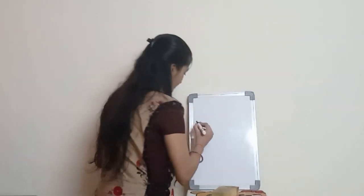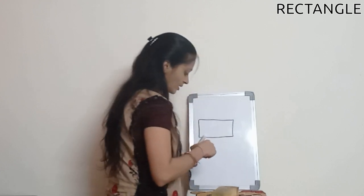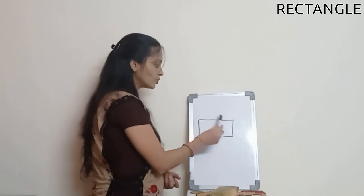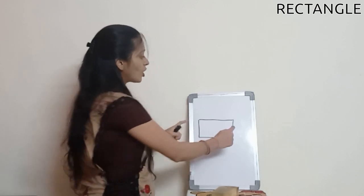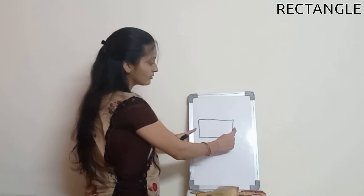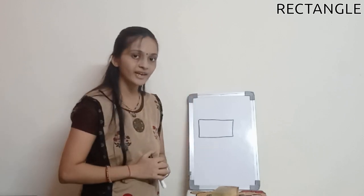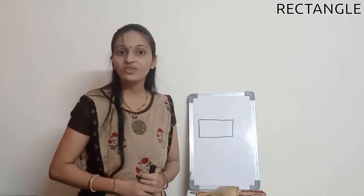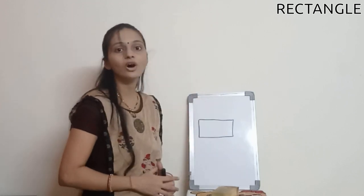Now let us move on to our next shape, that is rectangle shape. Let me draw. Kids, this is a rectangle shape. As you can see, even this shape has 4 sides: 1, 2, 3 and 4. The difference between this rectangle shape and the square shape is that the opposite sides of the rectangle shape are equal — these 2 sides are equal and these 2 sides are equal in size. But in square shape, all 4 sides are equal. We have LED TV, dining table, cupboard. Even this board is also of a rectangle shape.